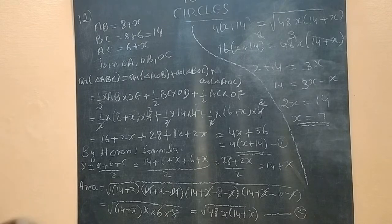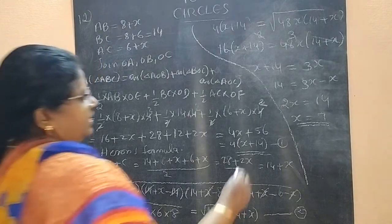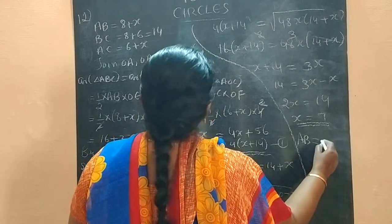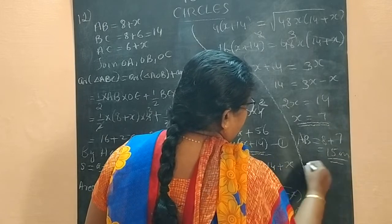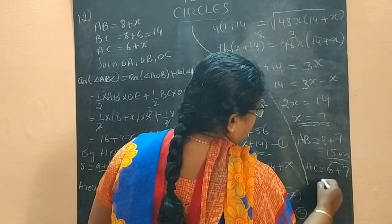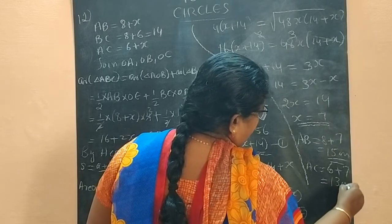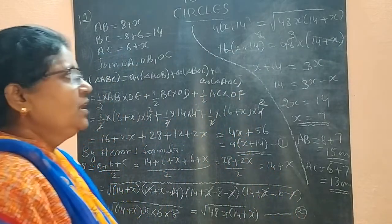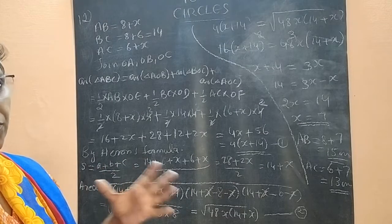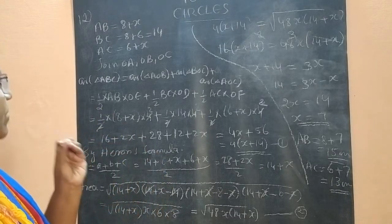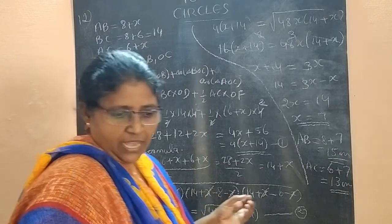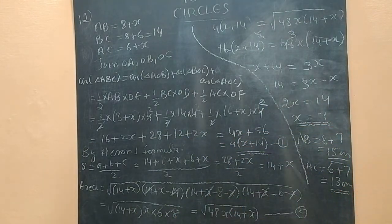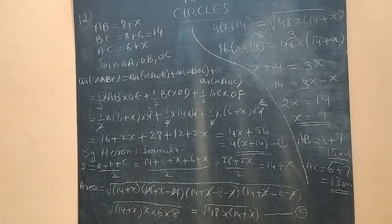So when X = 7, we can find AB and AC. AB = 8 + 7 = 15 centimeters. AC = 6 + 7 = 13 centimeters. This is one particular type of question — for finding the unknown, we find the area of the whole triangle using two formulas: half×base×height and Heron's formula.